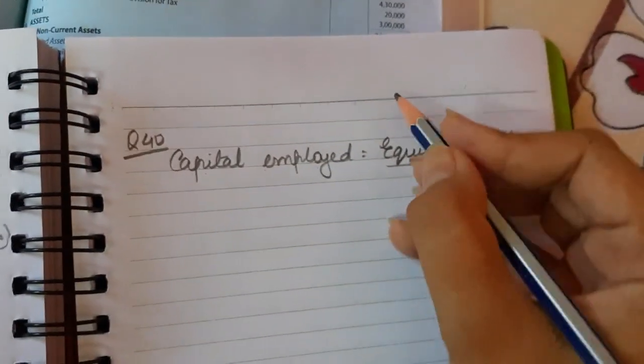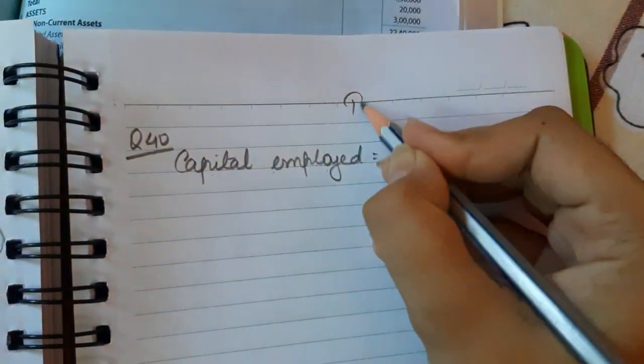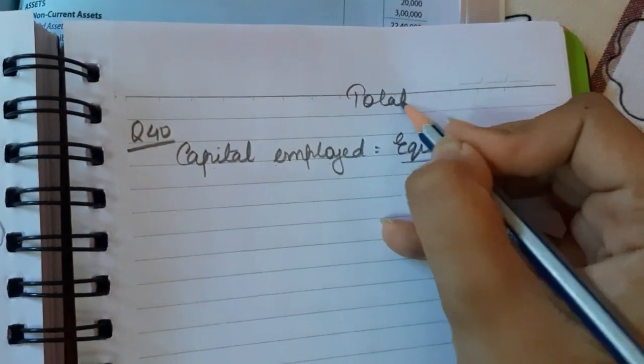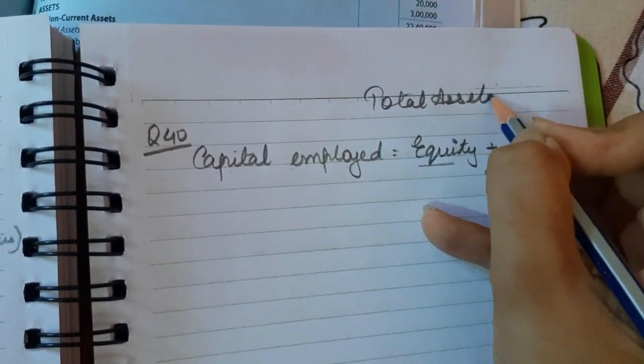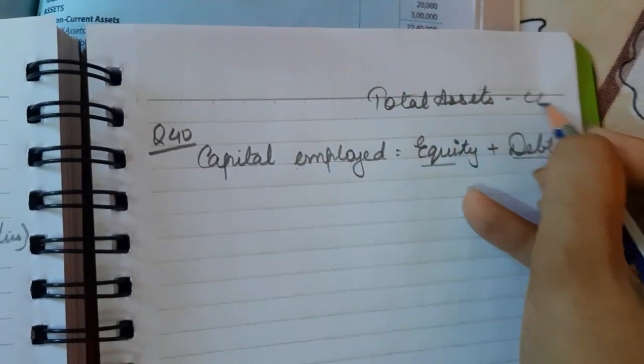We also had the formula as total assets less current liabilities.